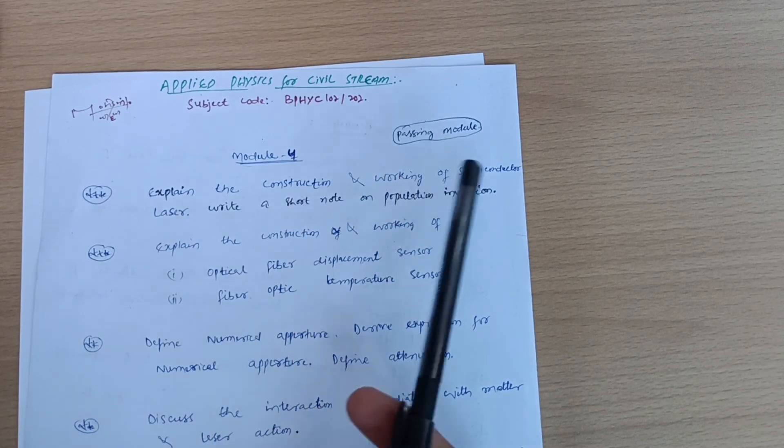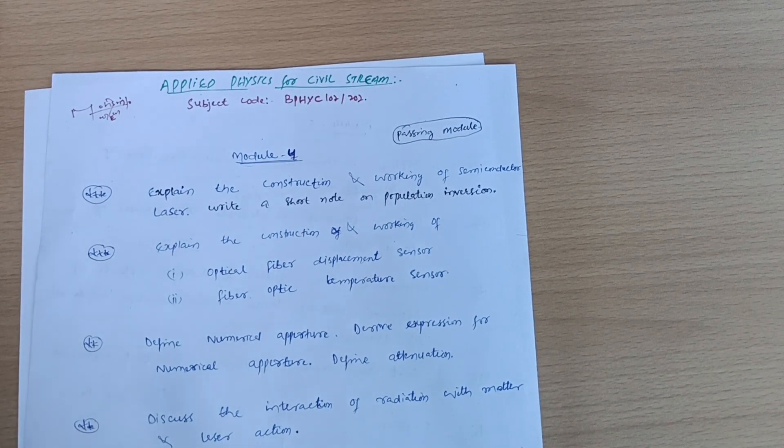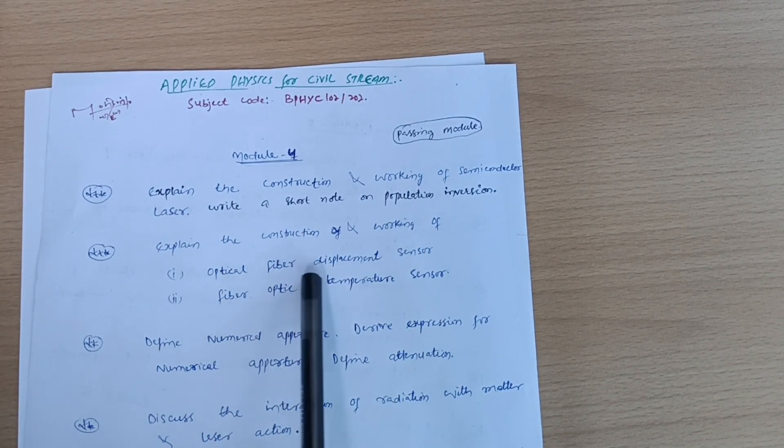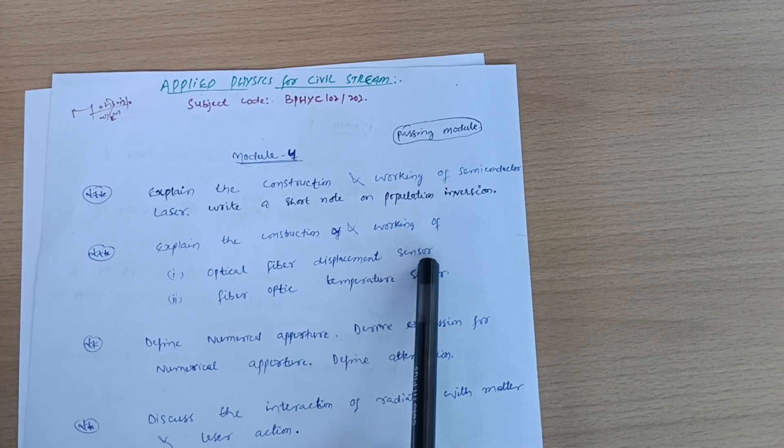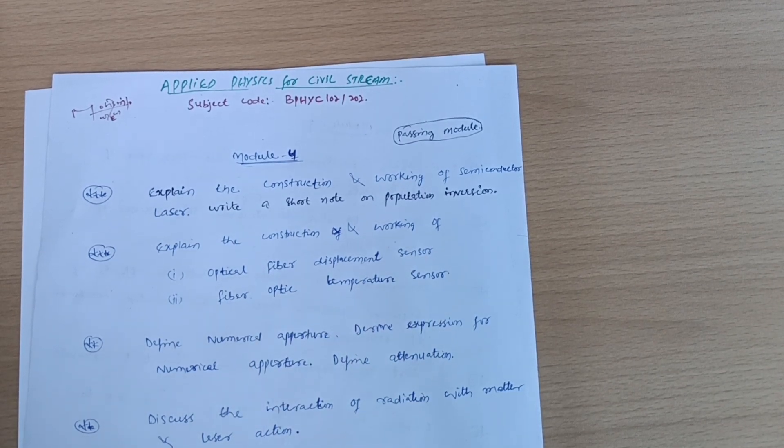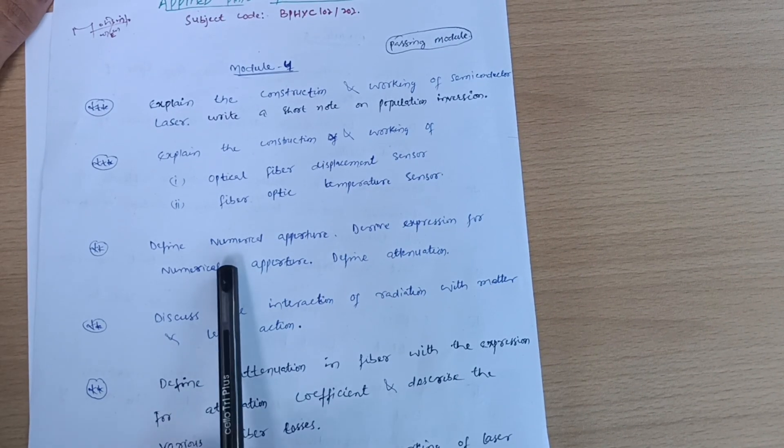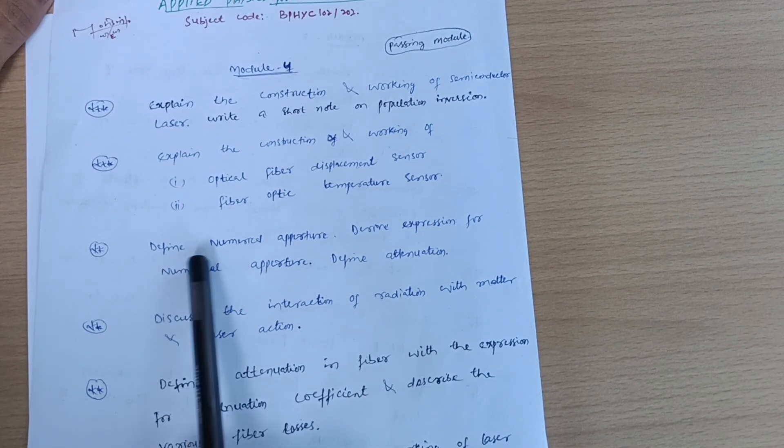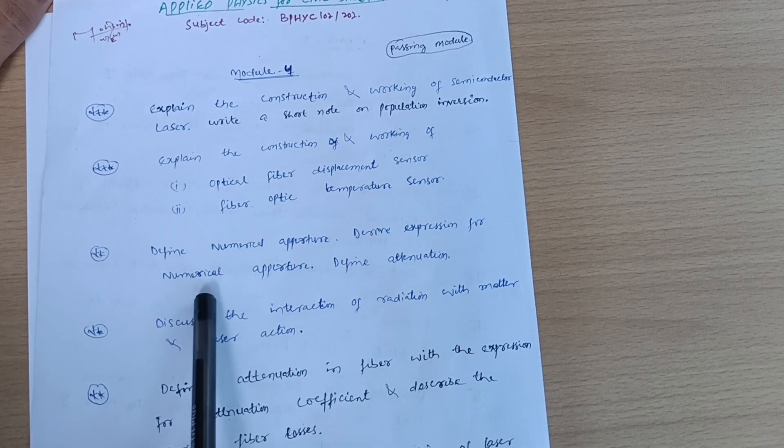Semiconductor laser construction: explain the construction and working of optical fiber displacement sensor and fiber optic temperature sensor. Next we have, super important again, define numerical aperture, derive expression for the numerical aperture, and define attenuation.